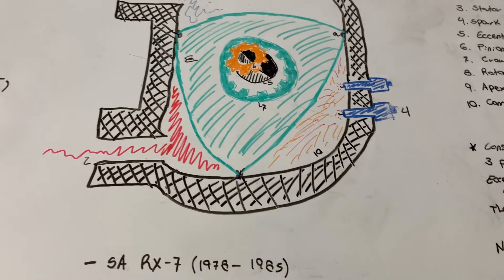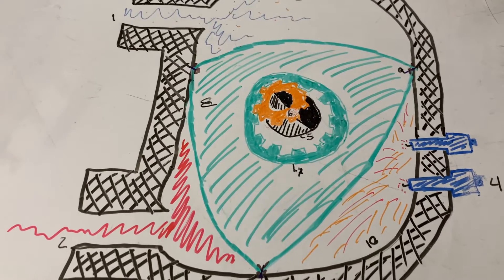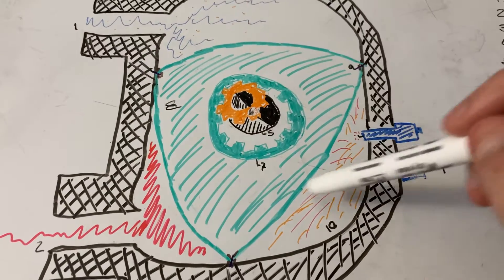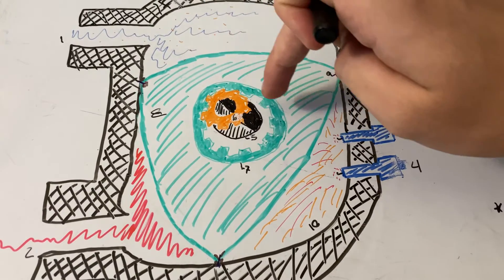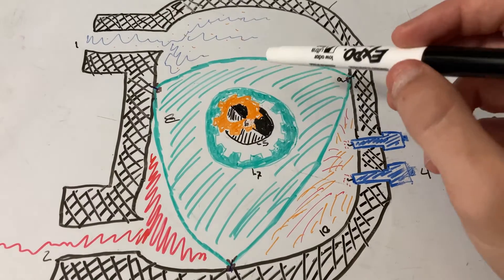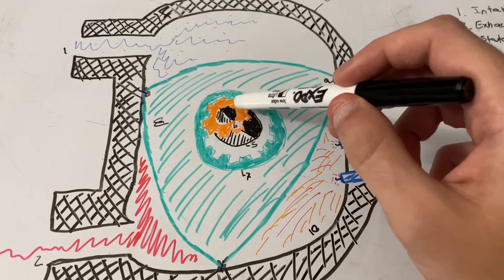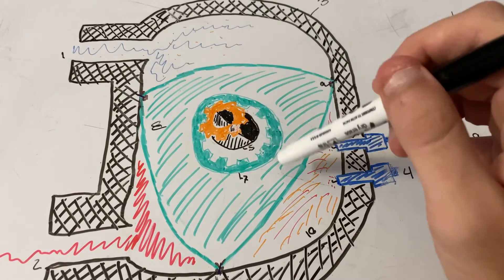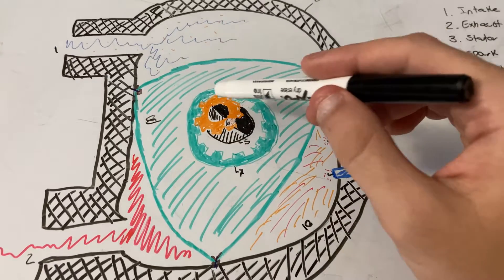That's your eccentric shaft or crankshaft. Number six would be your pinion gear and number seven will be your crown gear. As the rotor — people call it the dorito — spins, this gear forces the other gear to roll as well, but they are geared in a one-to-three ratio: for every one revolution of the rotor, the crankshaft spins three times.